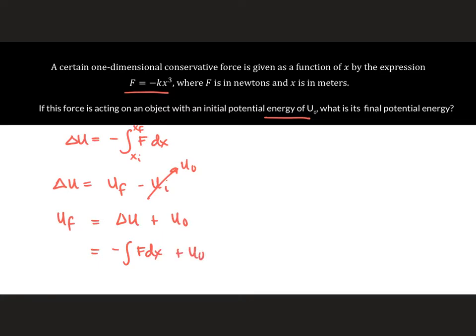So substituting F from our equation or our given, we will have the negative of the integral of negative kx cubed plus U₀. And applying the rules of integration, we will have U final is equal to negative of negative kx to the fourth power divided by 4 plus U₀.